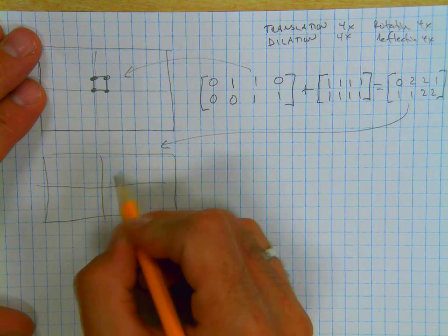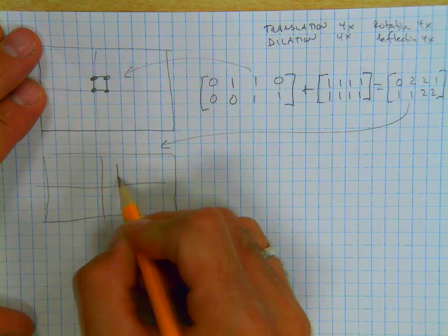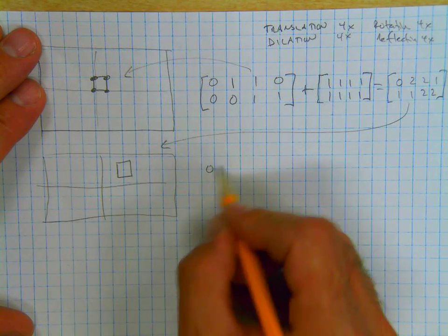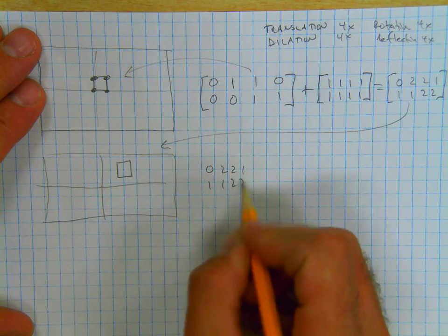And what you're going to do then in your next slide is graph that one. And so now it's going to move here. And so that new matrix representing this image is going to be 0, 2, 2, 1, 1, 1, 2, 2.